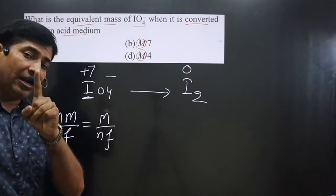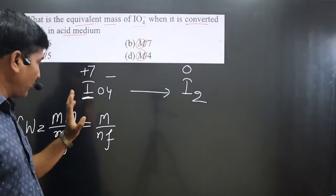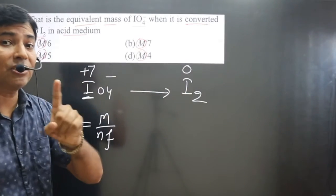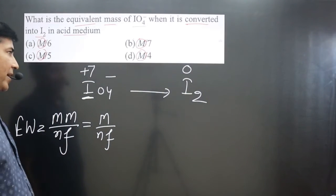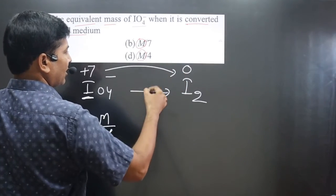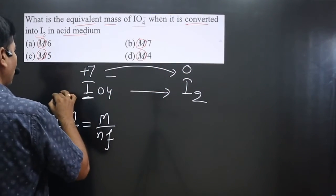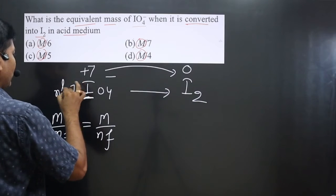oxidation state, and on the other side one iodine is in zero oxidation state. The difference in oxidation number gives the n-factor value: 7 minus 0 equals 7. So the n-factor value is 7.